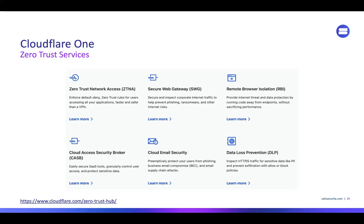Cloud email security — they just bought something called Area One Security. They were a vendor of Cloudflare's, and the president realized he had no spam for like three weeks. When he asked about it, they said they'd just acquired Area One Security — so buy them, and they did. Now they're part of Cloudflare. Their DLP is really good — they use Intel 471 on the back end. They license that so you don't pay anything extra, and they will go look into your zip files and sites and give you feedback on malware coming through.